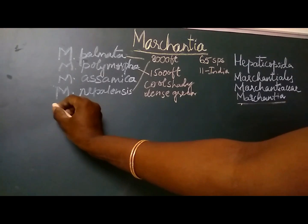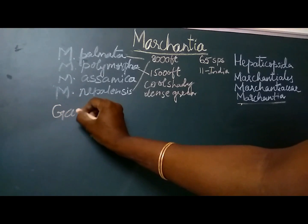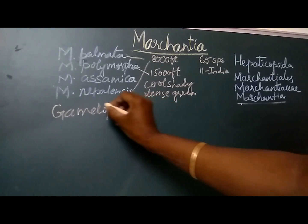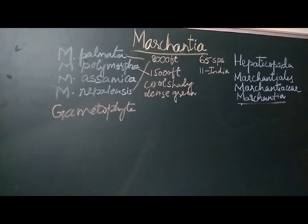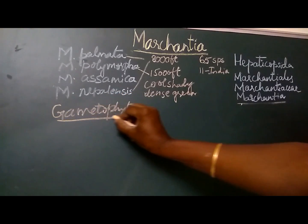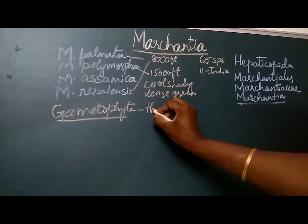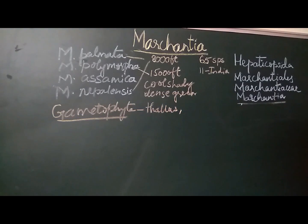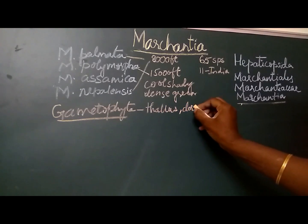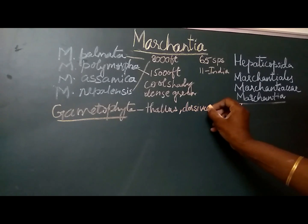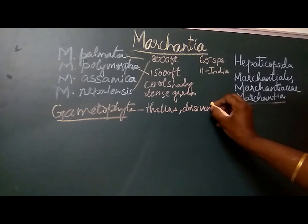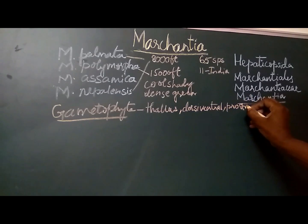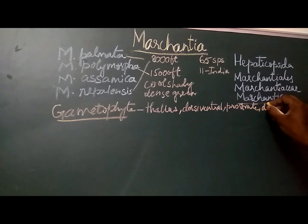The dominant phase of Marchantia is the gametophyte. The gametophyte of Marchantia is a simple thallus — that is, it is not differentiated into root, stem, or leaf-like structures. It is dorsi-ventral, dorsi-ventrally flattened, prostrate (creeping on the ground), and dichotomously branched.